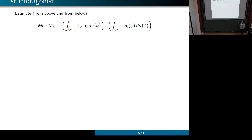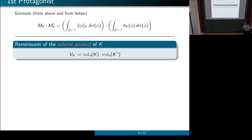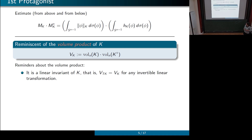Our first protagonist is the product M(K)·M*(K), the product of the mean norm and the mean width of a convex body, which we want to estimate from above and below — primarily from above. We take the product because otherwise you'd have a degenerate bound: each quantity alone could get really large or really small, but the product is hopefully controlled. This is reminiscent of the volume product, where the volume of K alone can be made very large or small, but multiplied by the volume of the polar body it's a controlled quantity. The volume product is a linear invariant of K — it doesn't change under linear transformations.